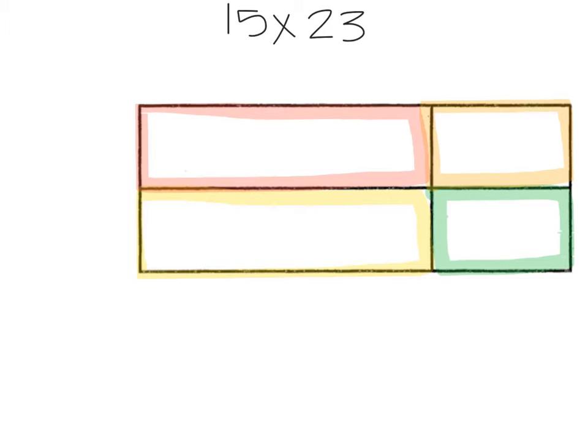Hey guys, today we're going to start working on partial products for a two-digit times a two-digit number. We're going to start with 15 times 23, and I'm going to show you how to break it down in the partial product box and how you can use the box to help you solve this problem. Partial products help you split it up a little better where you're not having to traditionally work out the algorithm.